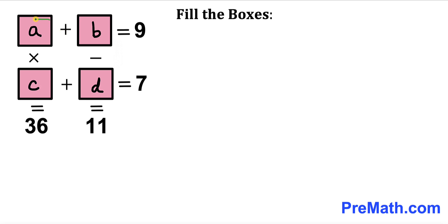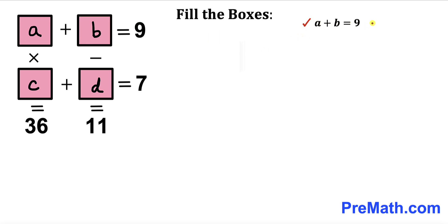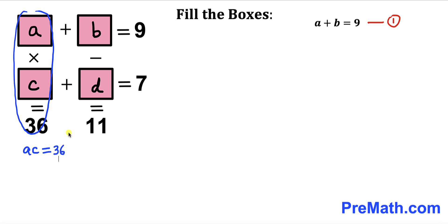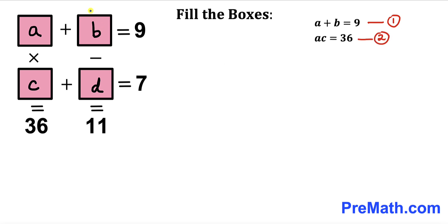Here's our very first step. Let's focus on these boxes — that gives us a plus b equals 9. I'm going to call this equation number 1. Now focusing on the vertical boxes on the left-hand side, that gives us a times c equal to 36. I'm going to call this equation number 2.